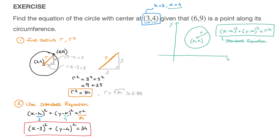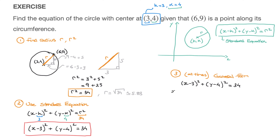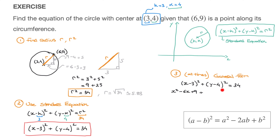At times we may also be asked to find the general form of the circle's equation. To get the general form, we start from the standard equation and expand each pair of parentheses. (x − 3)² expands to x² − 6x + 9, using the perfect square identity. And (y − 4)² expands to y² − 8y + 16. So we have x² − 6x + 9 + y² − 8y + 16 = 34.